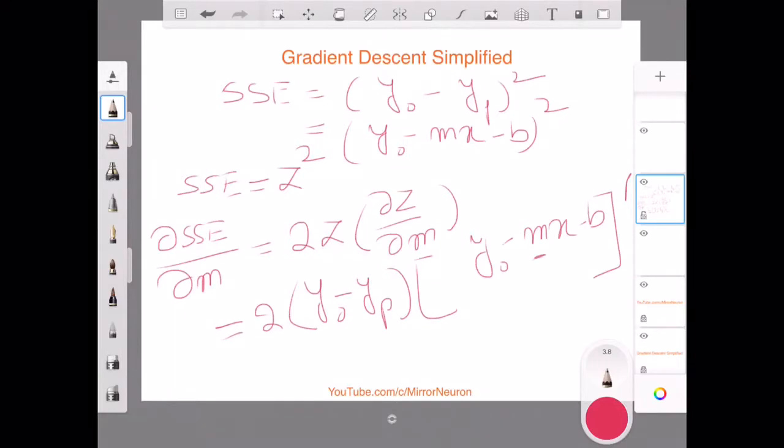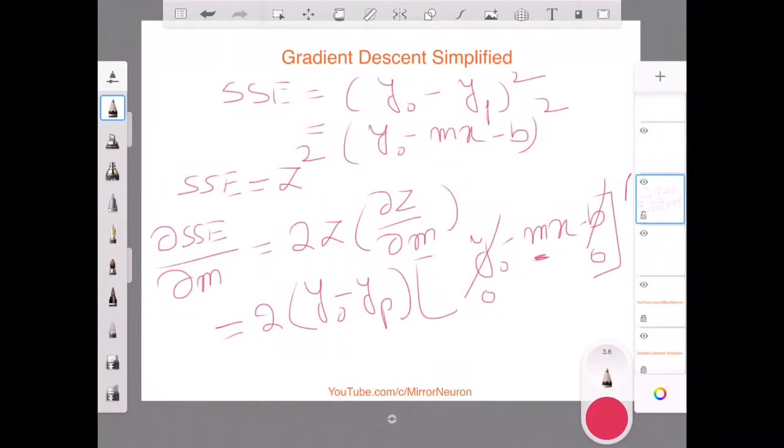So I am trying to see the dependency. We know that y naught is the original value, so even if I change m, it is not going to change at all, so this becomes 0. b has no dependency on m, so this also becomes 0. The only term that is left out is if I take a derivative of mx with respect to m, then it becomes minus x.